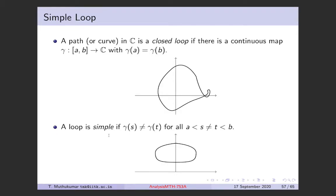A loop is called simple — a simple closed curve or simple loop — if there is no self-intersection. For any two interior points s and t in the domain (a, b), the curve doesn't take the same value. It only coincides at the endpoints: the curve starts at a point, never intersects itself, and then comes back to the same point.